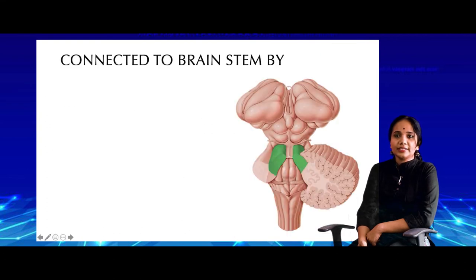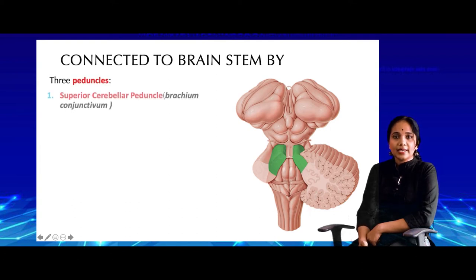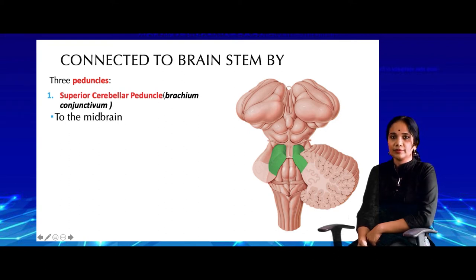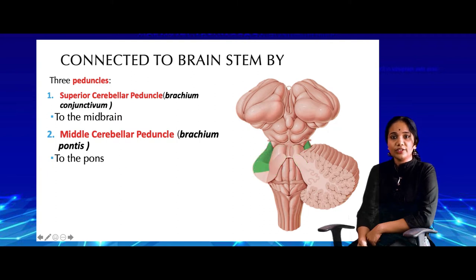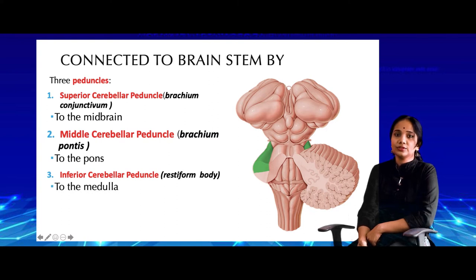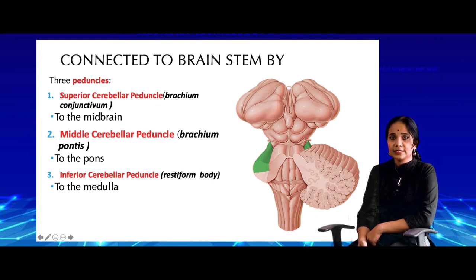The cerebellum is connected to the brain stem by three different peduncles. The superior peduncle is called the brachium conjunctivum, which attaches the cerebellum to the midbrain. The middle cerebellar peduncle is called the brachium pontis, attaching the cerebellum to the pons. The inferior cerebellar peduncle is called the restiform body, attaching the cerebellum to the medulla. Please remember that whenever the term 'restiform body' is seen in textbooks, it refers to the inferior cerebellar peduncle.